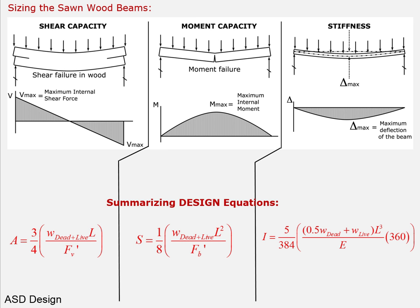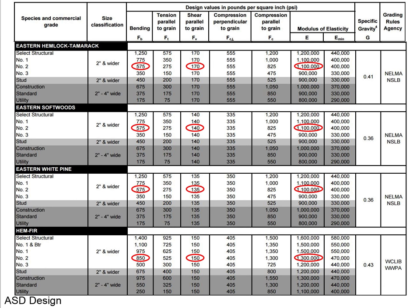Now we need allowable stresses Fv' and Fb', and stiffness E. From the design tables organized by species and commercial grade, we find allowable bending stress Fb, shear stress Fv, and modulus of elasticity E. For floors with repetitive members, we use the average E value. The table lists species such as Eastern Hemlock, Douglas Fir-Larch, and Spruce-Pine-Fir South.